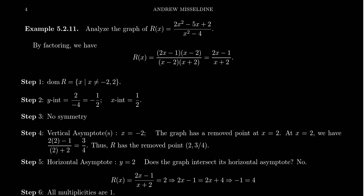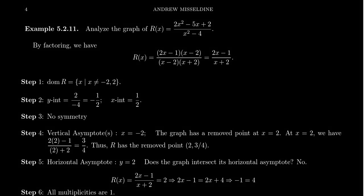In this video, I want to graph the rational function R of x equals 2x squared minus 5x plus 2 in the numerator and x squared minus 4 in the denominator, without using any technology whatsoever — just based upon information of how the function behaves near its asymptotes and how it behaves near its intercepts. So let's start figuring out what those asymptotes and intercepts are.